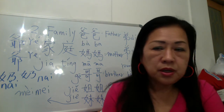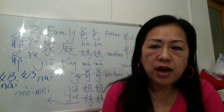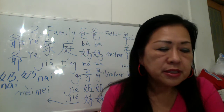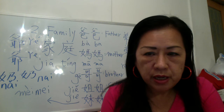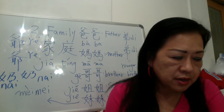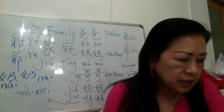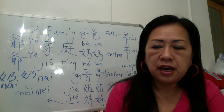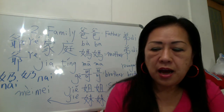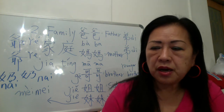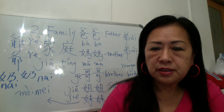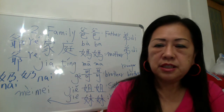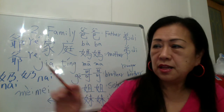那么我们先说Dialogue 1的vocabulary，vocabulary在page 43. 'That' — that means 那. So here we say 这, there we say 那.